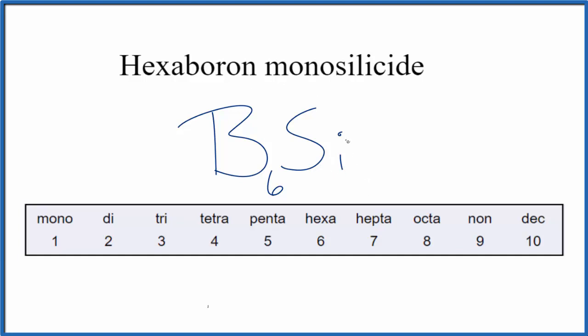Again, I don't know much about the compound, but if you're asked to write the formula, the formula for hexaboron monosilicide is B6Si.